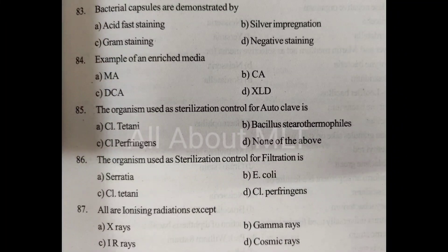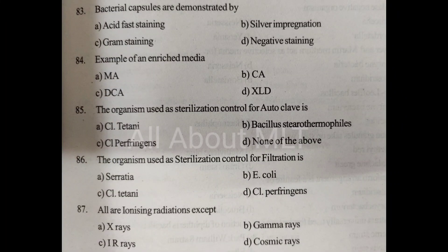All are ionizing radiations except. Option A: X-rays. Option B: Gamma rays. Option C: IR rays. Option D: Cosmic rays. Answer is Option C: IR rays.